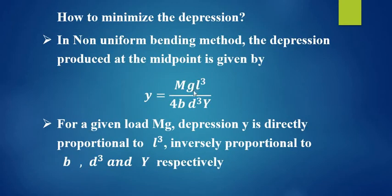Here M is the mass, g is the acceleration due to gravity, L is the distance between the two knife edges, B is the breadth of the beam, D is the thickness of the beam, and capital Y is the Young's modulus of the material of the beam.